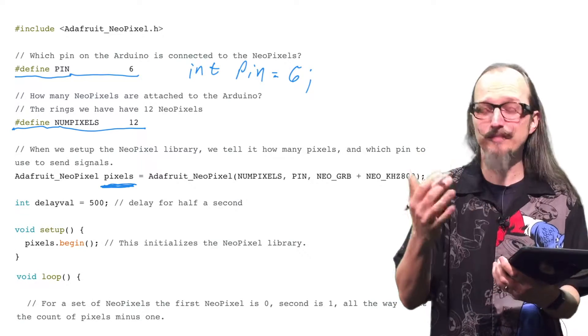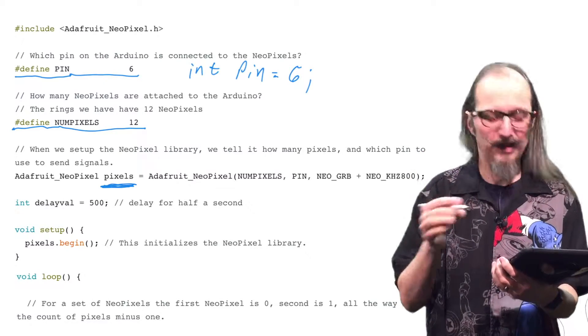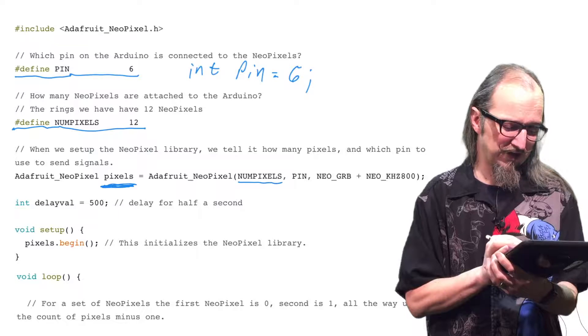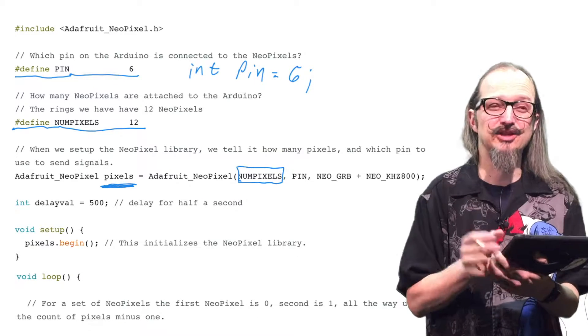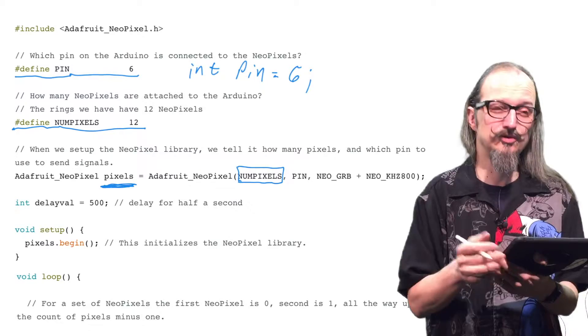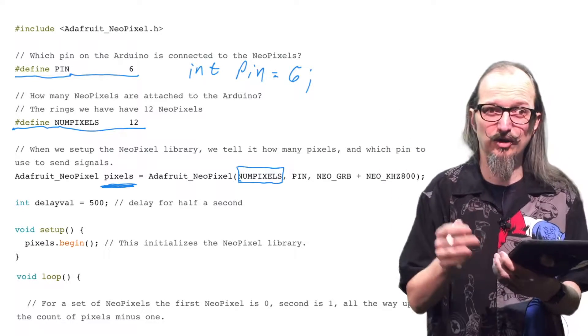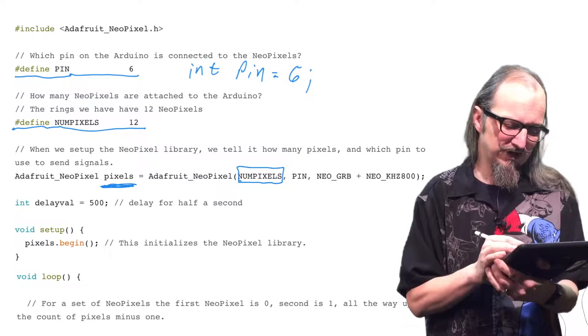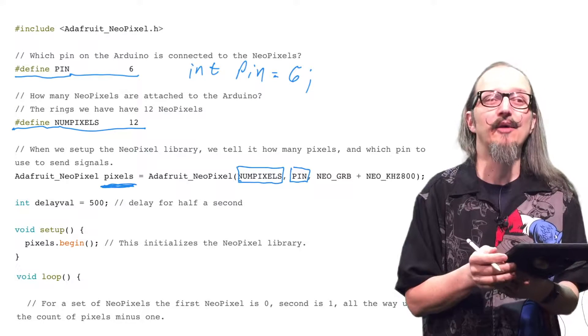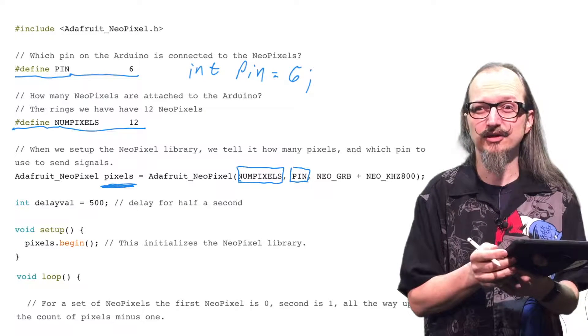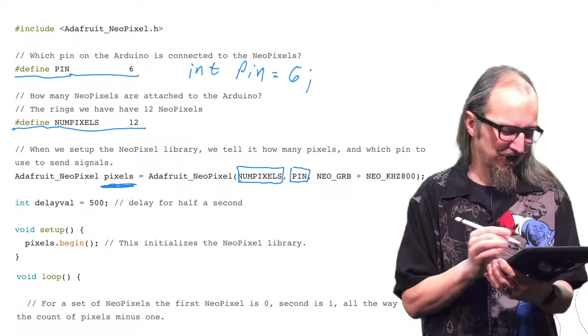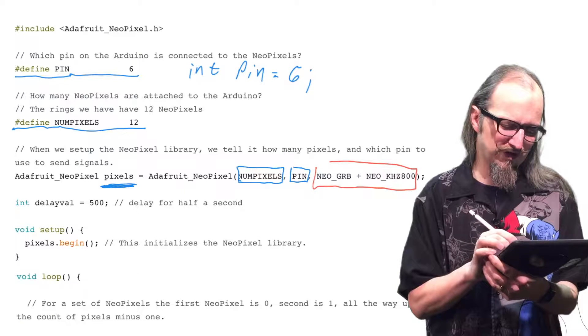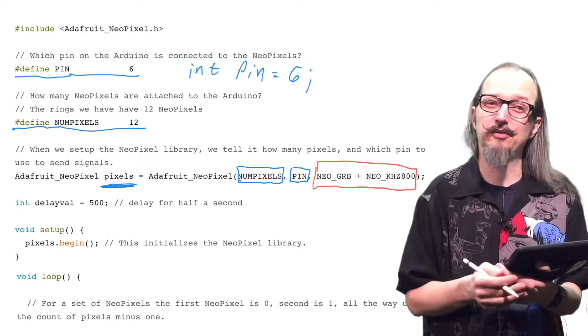So when we invoke pixels, when we invoke the pixel library, we're going to have three arguments. Our first argument is the number of LEDs that we're attaching to the Arduino in this NeoPixel string. The second argument, so this, clearly that's why we put numpixels there. The second one is a number again and this is the pin that we're going to be using with our NeoPixel. Not so bad, right? Now, the last argument, this one's a little different.